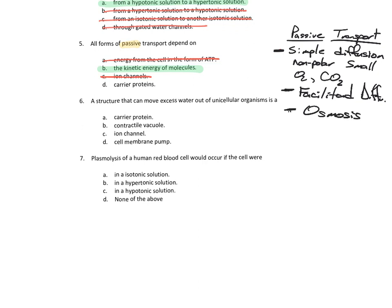Energy from ATP would be active transport. Ion channels would be facilitated diffusion — that's simple diffusion. Then you have facilitated diffusion and osmosis — those were the three passive transport types. They're in that chart in the study guide. If you haven't taken the test, make sure you're ready to take the test tomorrow. This is a practice for you.